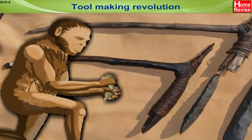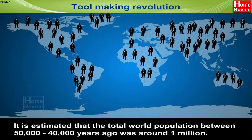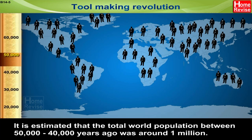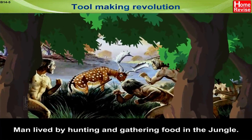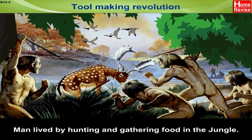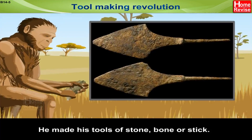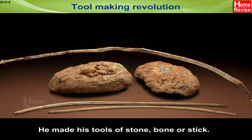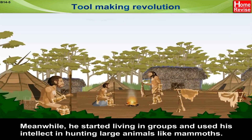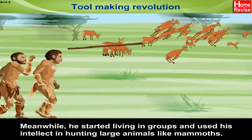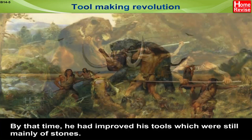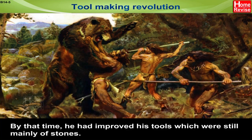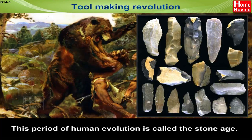Tool making revolution. It is estimated that the total world population between 50,000 to 40,000 years ago was around 1 million. Man lived by hunting and gathering food in the jungle; he made his tools of stone, bone, or stick. He started living in groups and used his intellect in hunting large animals like mammoths. By that time he had improved his tools, which were still mainly of stone. This period of human evolution is called the Stone Age.